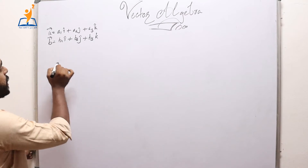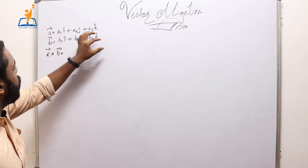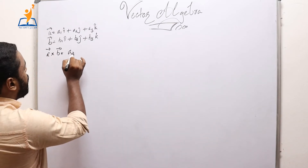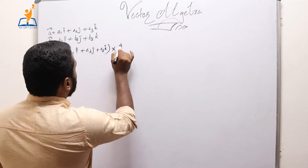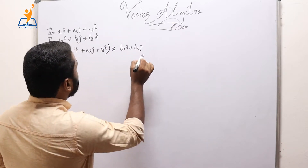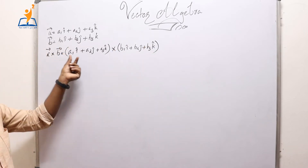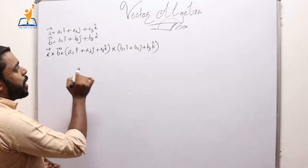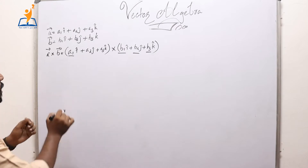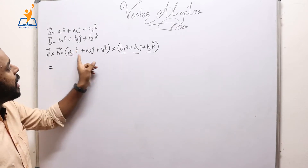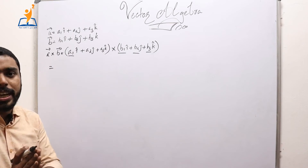We have to find A cross B, so we substitute the component forms of A and B. It will become (a1 i-hat + a2 j-hat + a3 k-hat) cross (b1 i-hat + b2 j-hat + b3 k-hat). We can find the cross product by expanding this bracket — multiplying each component of A with each component of B. Since a1 and b1 are scalars, we can write a1·b1 (i-hat cross i-hat), then a1·b2 (i-hat cross j-hat), and so on.